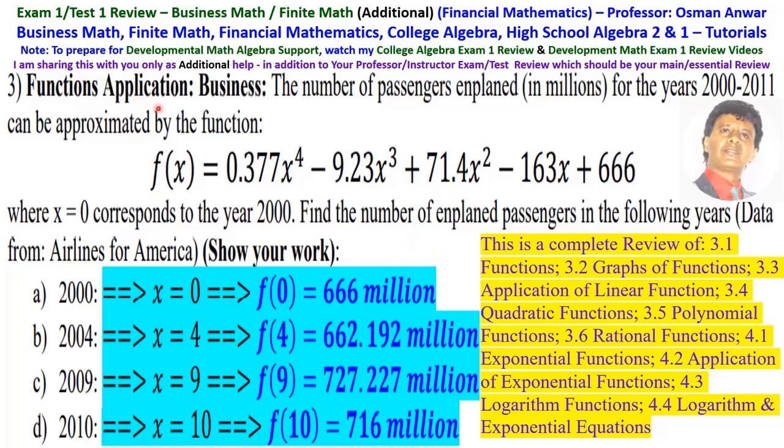Number 3 is application, business application. The number of passengers enplaned in millions for the year 2000 to 2011 can be approximated by the function